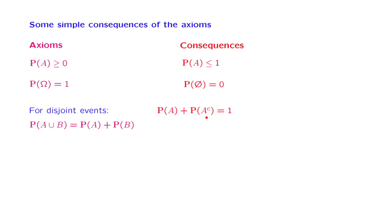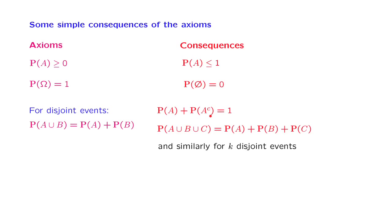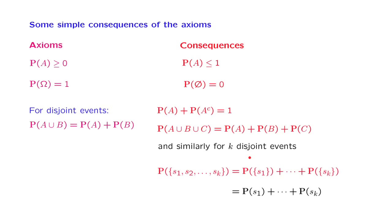Finally, we can generalize the additivity axiom, which was originally given for the case of two disjoint events, to the case where we are dealing with the union of several disjoint events. By disjoint, we mean that the intersection of any two of these events is the empty set. We will prove this for the case of three events, and the argument generalizes to the union of k disjoint events for any finite k. We will also use it to calculate the probability of a finite set by simply adding the probabilities of its individual elements.